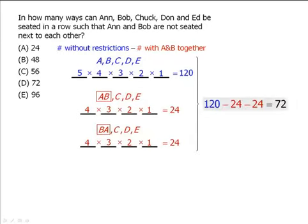We now can calculate 120 minus 24 minus 24, which equals 72. So there are 72 possible arrangements such that Ann and Bob are not seated together.